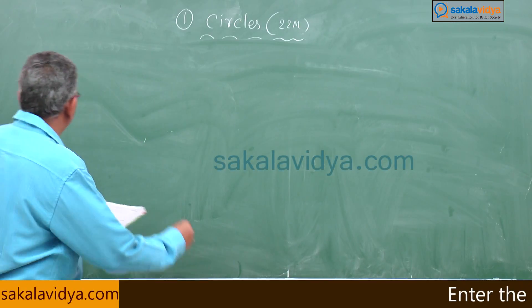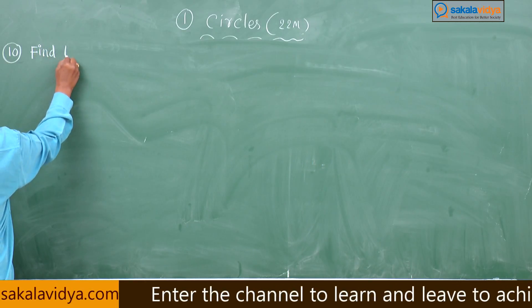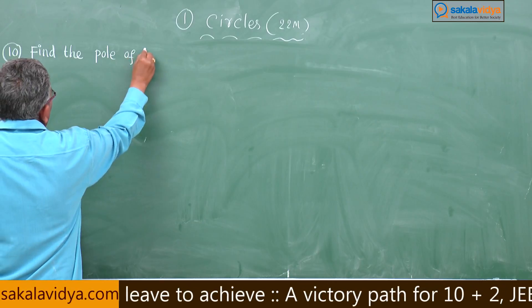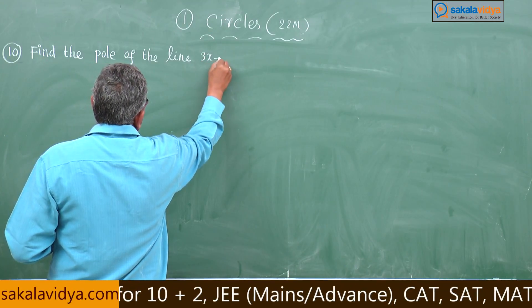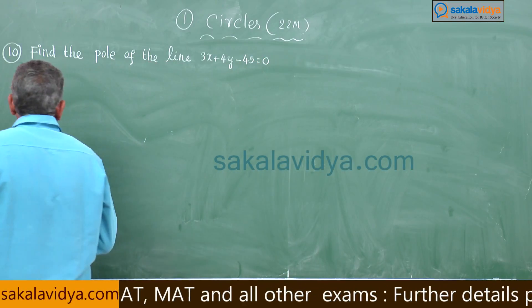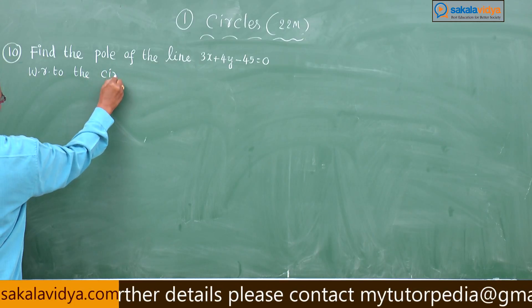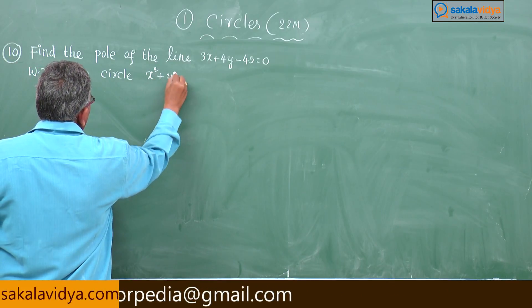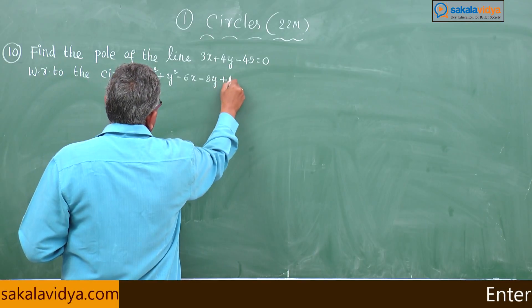Problem 10: Find the pole of the line 3x + 4y - 45 = 0 with respect to the circle x² + y² - 6x - 8y + 5 = 0.